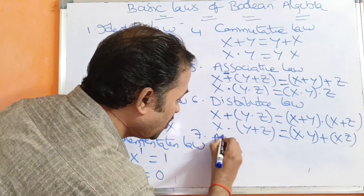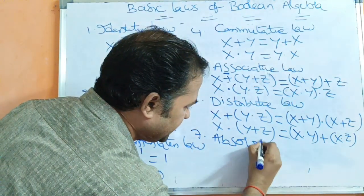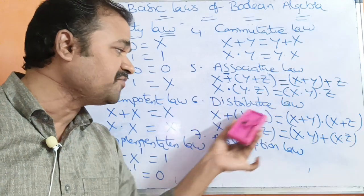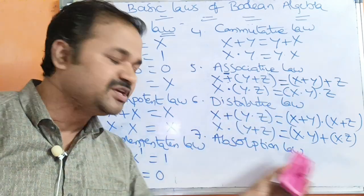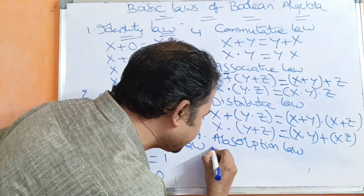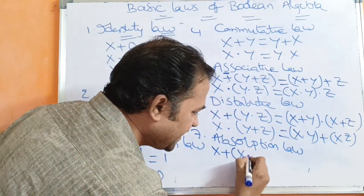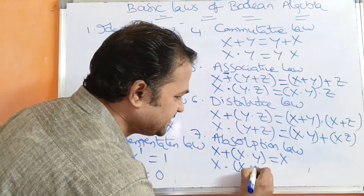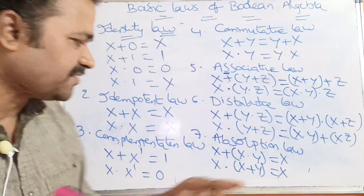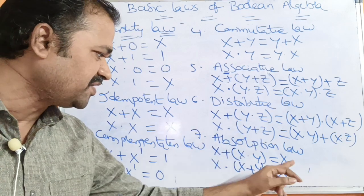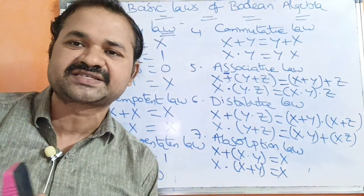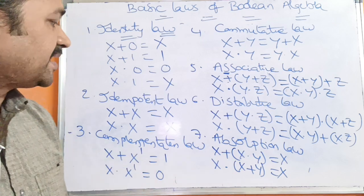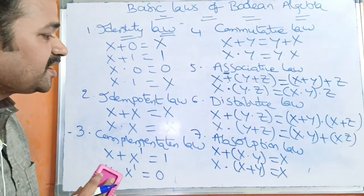The next one is absorption law, which is similar to distributive law but uses only two variables. x plus (x dot y) equals x, and x dot (x plus y) equals x. We can verify whether the result is correct with the help of a truth table.